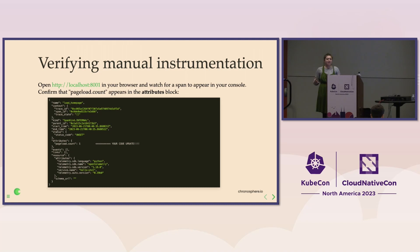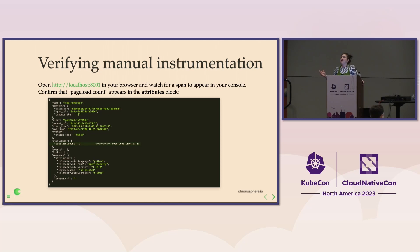The way we're going to verify this manual instrumentation: when we load up our homepage, we should see in the console a span pop up that specifically has, in the attribute block, 'page_load_count' — one or however many times you refresh. I like to refresh like a madman, so mine always gets up to seven or eight. That is how you know we've successfully piped through that manual attribute. We will not be working with spans in textual form for long, I promise — this is just the easiest way to get started early on.